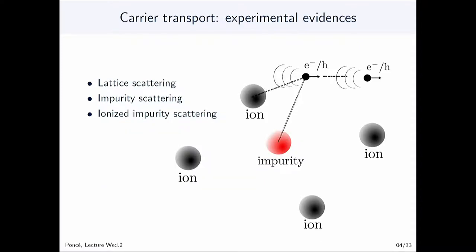When you have a carrier propagating into a material — an electron or a hole — it will have some interactions. It will interact with the lattice: this is lattice scattering, which slows down the flow of particles. You can also have the particle interacting with impurities, defects, or dislocations. Finally, you can also have interaction between the particles themselves, which will also hinder the propagation of this charge.